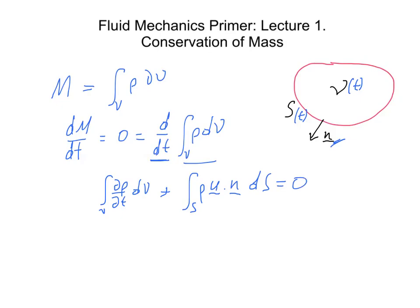I won't go into the details, but that allows us to then manipulate these terms a little bit more easily. This right-hand term can be turned back into a volume integral if we use Gauss's theorem or the divergence theorem, because this is just the integral over the volume of the divergence of ρU dV.